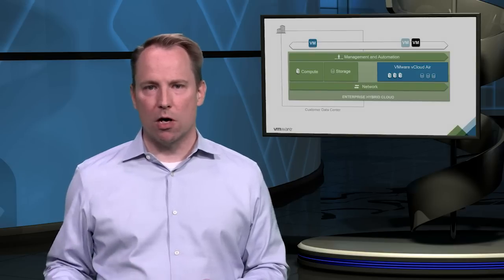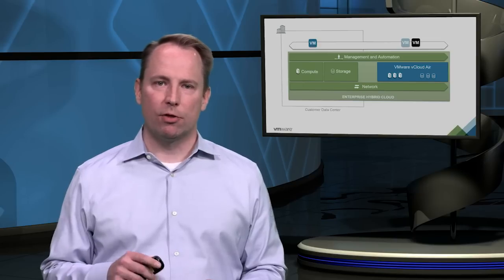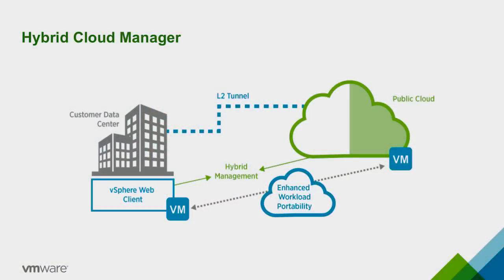The real secret sauce to extending data center resources, though, comes from our Hybrid Cloud Manager service. Hybrid Cloud Manager allows you to stretch an existing layer 2 network fabric into the vCloud Air data center, which means when your application moves, its IP and MAC addresses move right along with it, while still remaining connected back to your on-premises resources.